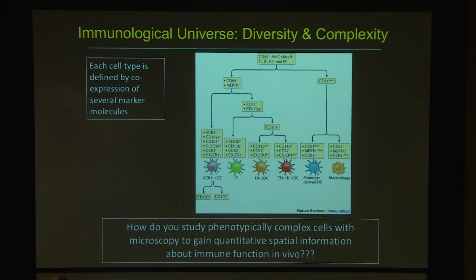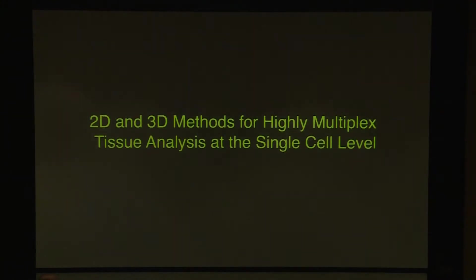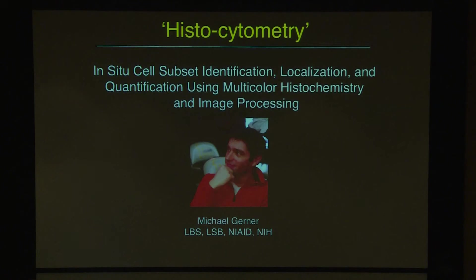Until very recently, the answer was you did two or three color immunofluorescence — they were red, green, and maybe you got yellow, and that was about it. And people are doing 15-color flow or 40-color CyTOF, and light gets complicated. So various labs have developed new approaches.